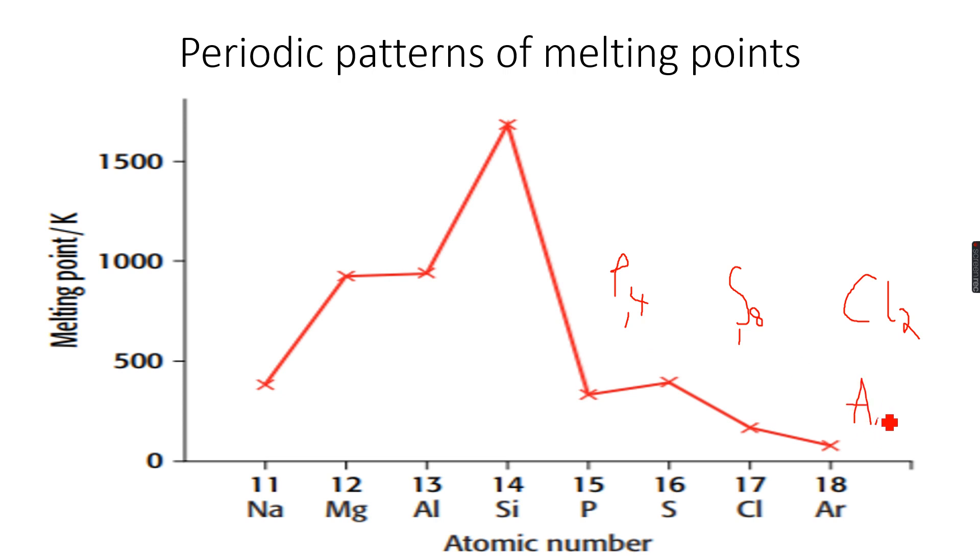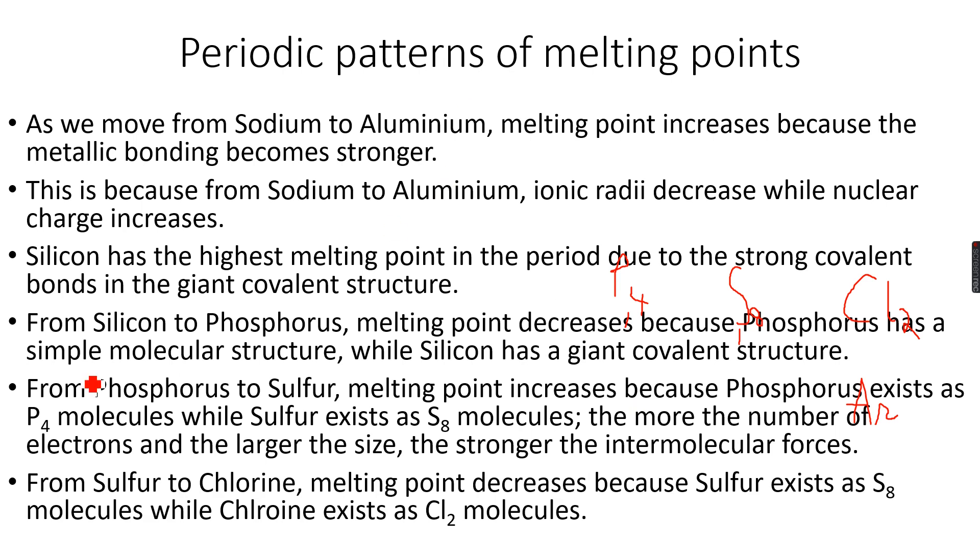Argon is monoatomic, it exists as a single atom, so again it has a lower melting point than all three of these. That's how we explain these patterns of melting points.